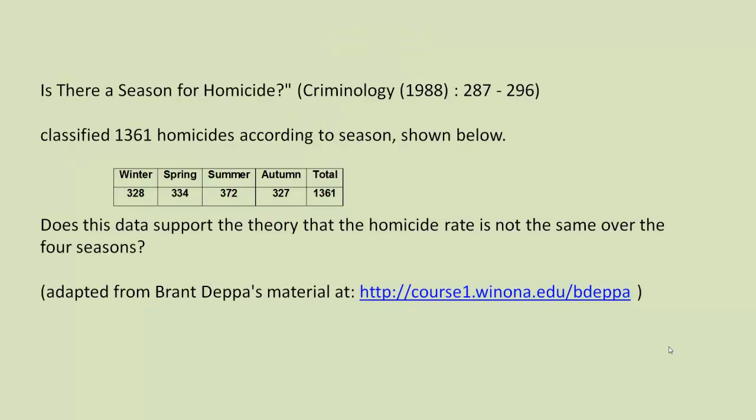Let's look at some data. Here is some data taken from an article in Criminology in 1988 entitled, Is there a season for homicide? So we have data from four periods of a year. Does our data support the theory that the homicide rate is not the same over all four seasons? So we're saying there's a constant homicide rate regardless of season.